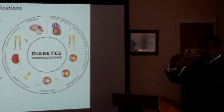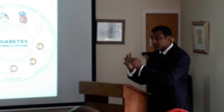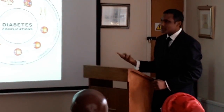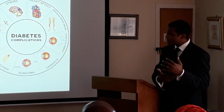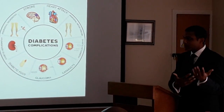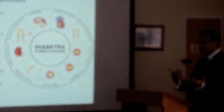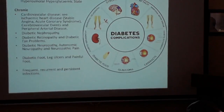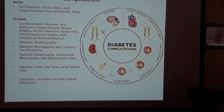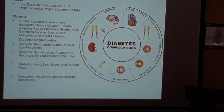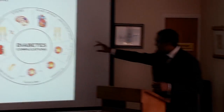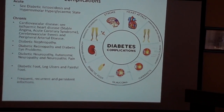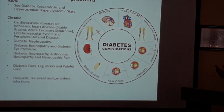Reduced blood flow to the brain can cause a stroke — now sometimes called a brain attack — and there may be correlation with vascular dementia as brain cells are lost. Reduced blood flow to the heart muscle causes a heart attack. Peripheral arterial disease involves loss of blood supply to the legs and other parts of the body.